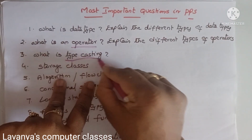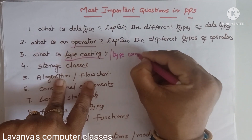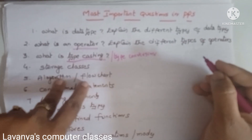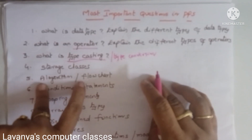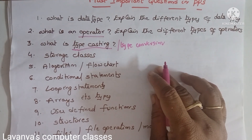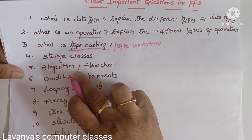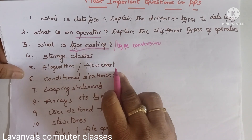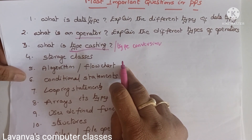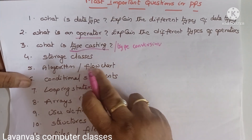The next topic is typecasting or type conversion — whatever the question format, the answer is the same. Next is storage classes: explain the different types of storage classes available in C language. Another fundamental question is: what is an algorithm and what is a flowchart? What symbols are used in a flowchart? Explain everything with a simple example, write the algorithm, and draw the flowchart.